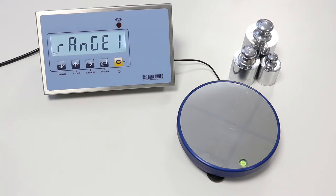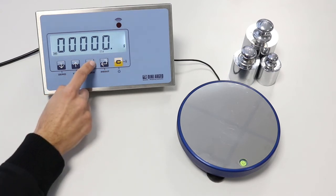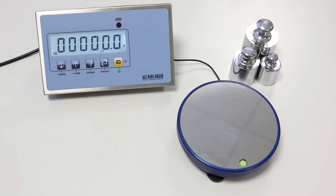Range 1 is the maximum capacity for a single range scale, or for multi-range scales as in our example, it is the first range. C key erases the values. Mode key allows to scroll the number from left to right. We need to set 1500 grams.